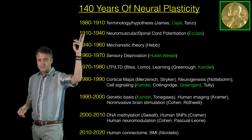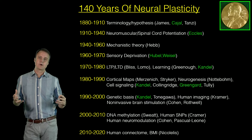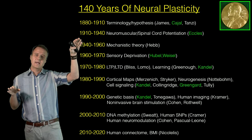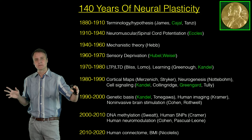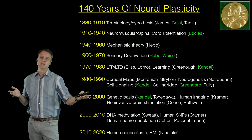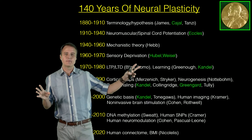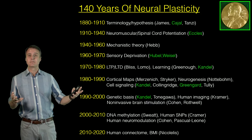Since the 1880s — and we could spend an entire lecture on the history — over the last 140 years there's been a whole series of events and areas of research that have produced a wealth of information: beginning with the theory of neuroplasticity, then showing examples of biological plasticity within the spinal cord, sensory deprivation techniques, potentiating synapses in the 60s and 70s, moving through larger examples of plasticity, cortical maps, genetics, DNA methylation, and then the human connectome. I want to point out that everybody's name shown in green in this timeline won a Nobel Prize for their work — this is work the medical field takes very seriously.